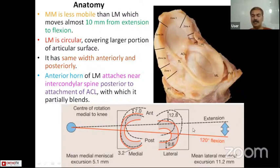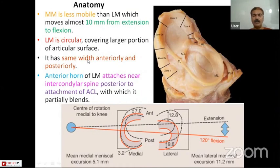The average excursion of the lateral meniscus is around 11 millimeters, and the medial meniscus average excursion is around 5 millimeters. The lateral meniscus is circular, covering a larger portion of the articular surface.